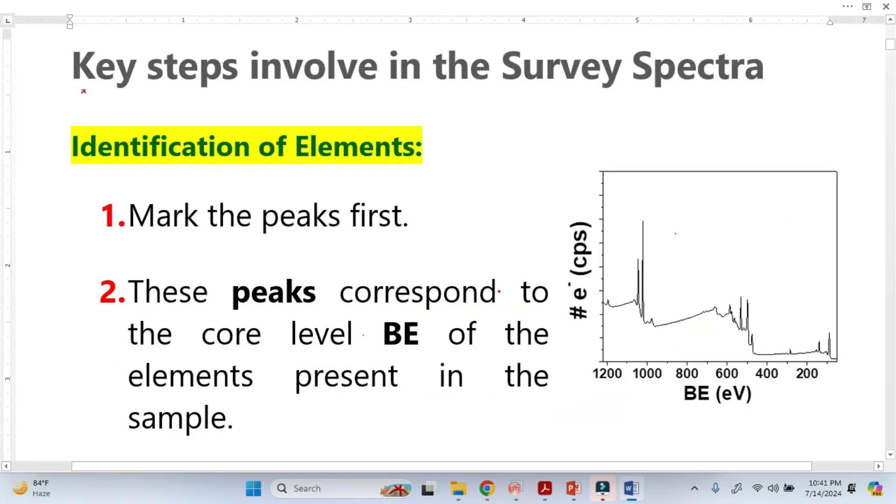Now let's discuss the key steps involved in survey spectra. We use survey spectra for identification of elements. Once we have this survey spectra, the first thing is to mark the peaks like this. This is one peak here, this is another peak, this is another peak. There are many peaks. For simplicity I just marked four peaks and we can do this by Origin.